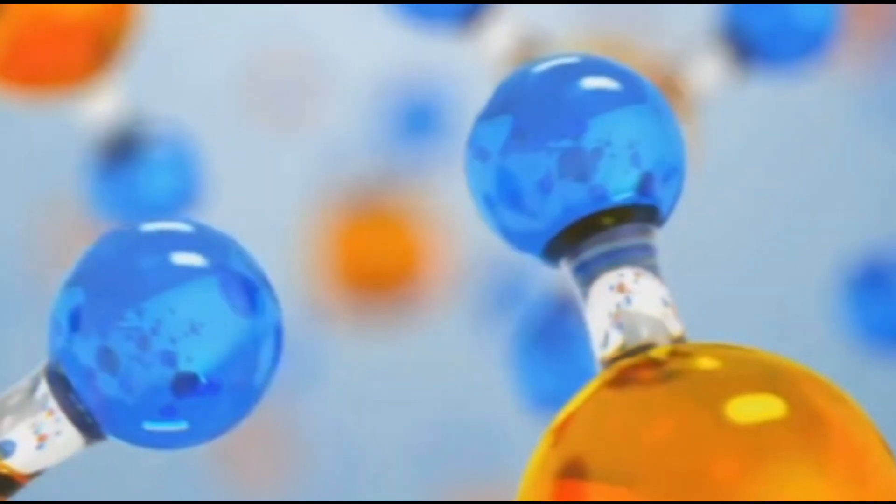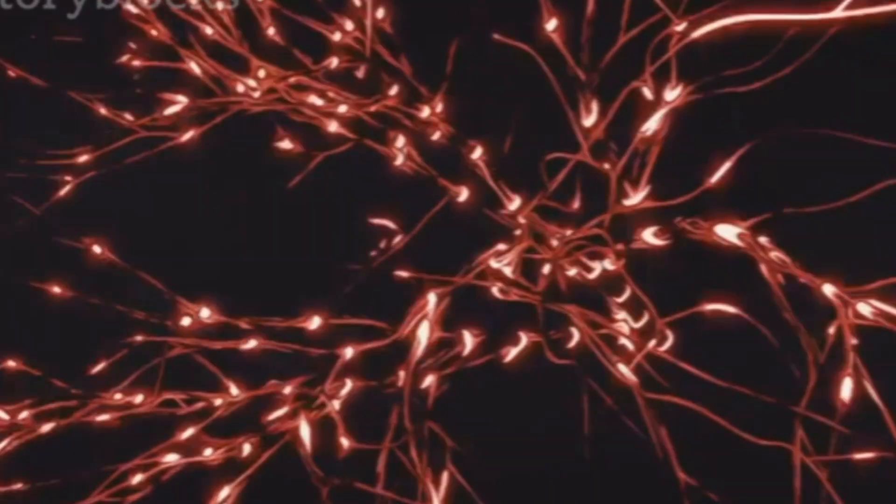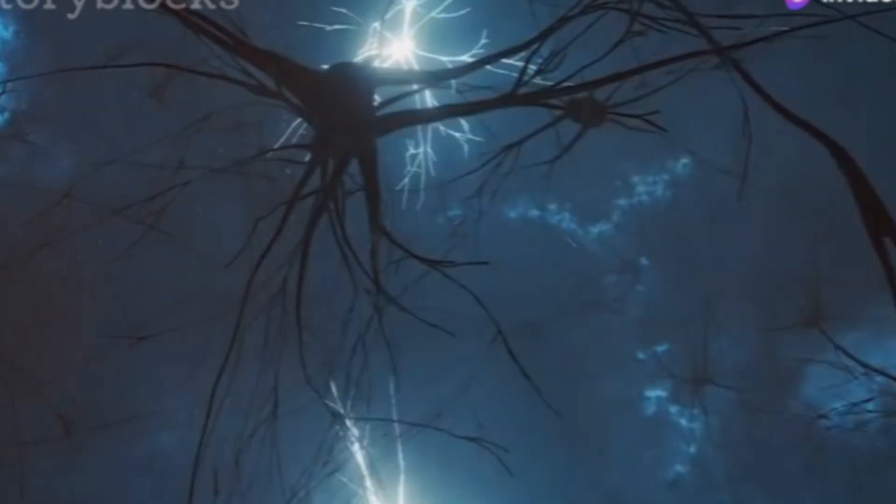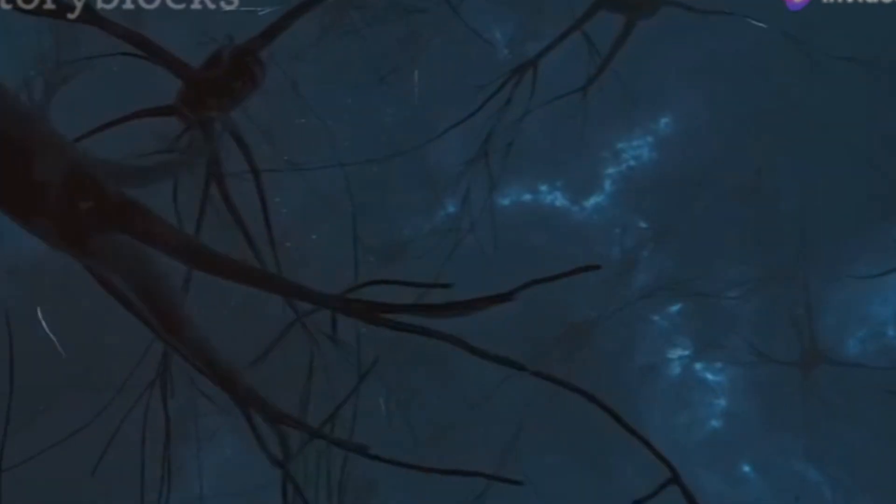Nitric oxide is involved in synaptic plasticity, learning and memory. It also regulates blood flow by dilating blood vessels. However, excessive nitric oxide can lead to neuroinflammation and neuronal damage. Research continues to uncover nitric oxide's complex functions in the brain.